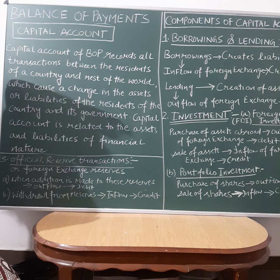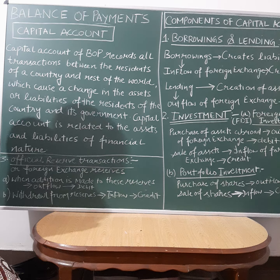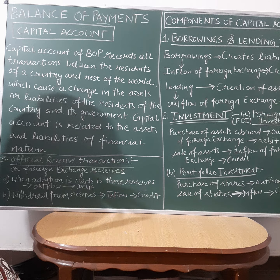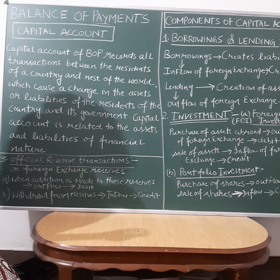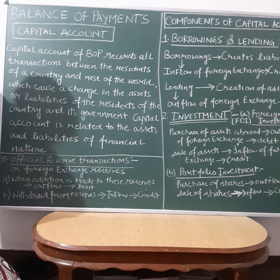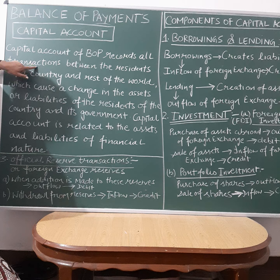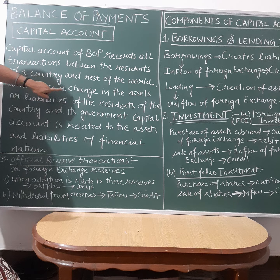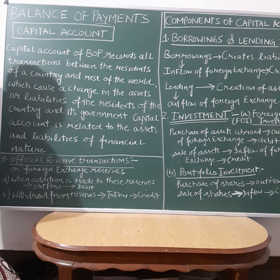As we know, there are two accounts for BOP. The very first one is current account, and the second one is capital account, which we are going to study today. Under capital account, we take all transactions between one country and the rest of the world which bring a change in assets and liabilities of residents and of the government.